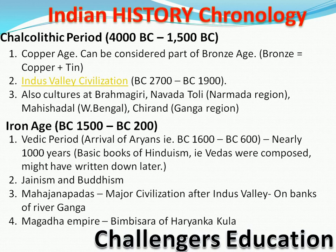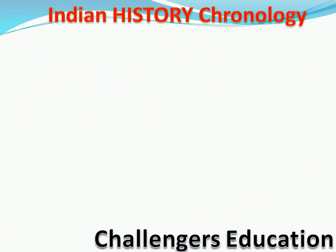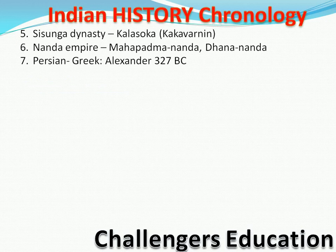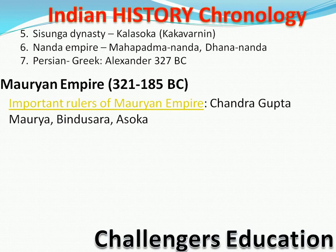Mahajanapadas ke baad hamare Magadha Empire aaye. Magadha mein jo famous tha woh hai Bimbisar — Haryanka kul ka. Isi period mein padhenge Shunga dynasty, Nanda Empire — jisme Mahapadmananda aur Dhanananda. Iske baad Persian rulers jaise hamare Porus the. Greeks mein Alexander (Sikandar) aur Porus ki ladai — that is around 321 BC to 185 BC.